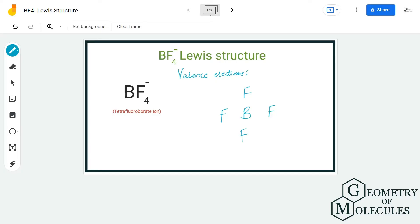Hi guys, welcome back to our channel. In today's video we are going to help you with BF4 minus Lewis structure. It is a chemical formula for tetrafluoroborate ion, and to find out its Lewis structure we will first look at the total number of valence electrons for this molecule.